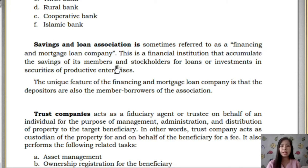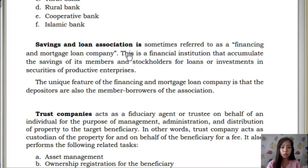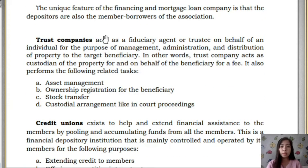The Savings and Loan Association is a financial institution that accommodates savings of its members. If you are a member and have extra money, you can save it in the association. And if you need money, you can take out a loan. Depositors are also member-borrowers of the association. You also have Trust Companies, which act as a fiduciary agent or trustee on behalf of an individual.